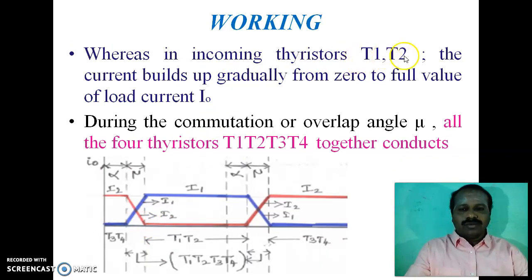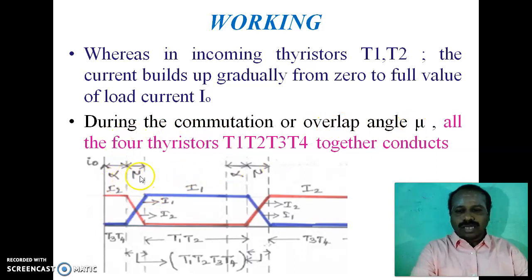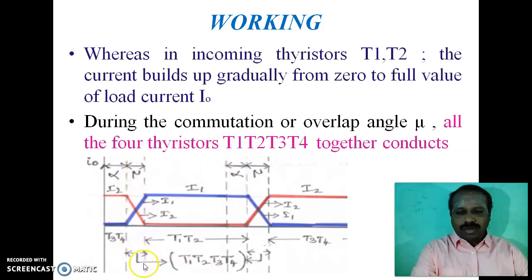The current does not instantaneously transfer to incoming SCRs T1 and T2. Instead, the outgoing SCR current I2 gradually decreases to zero, while in the incoming thyristors T1 and T2, the current builds up gradually from zero to the full value of load current I0 (= I1). After triggering of T1 and T2 at angle alpha, the incoming current I1 gradually increases to its final value. During the commutation or overlap angle mu, where the transition occurs from outgoing to incoming SCRs, all four thyristors T1, T2, T3, T4 conduct together, since T3/T4 current decreases while T1/T2 current increases.